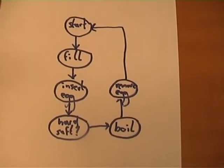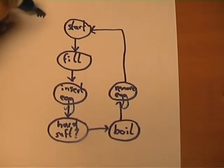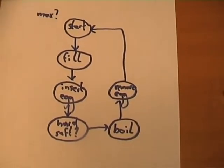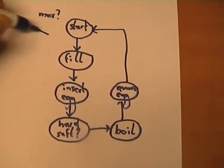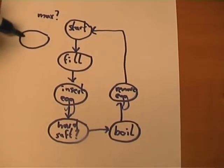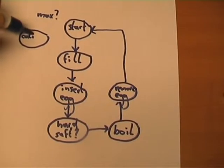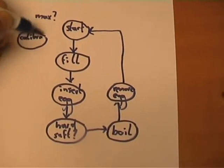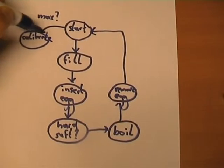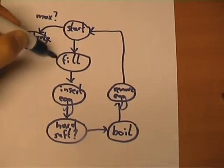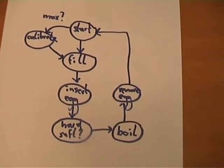There is one exception to this state machine. We need to know the maximum level of water to establish differences. If there is no maximum set, it will go to a calibration state where it determines the maximum and minimum levels. From there, we go to the fill state.